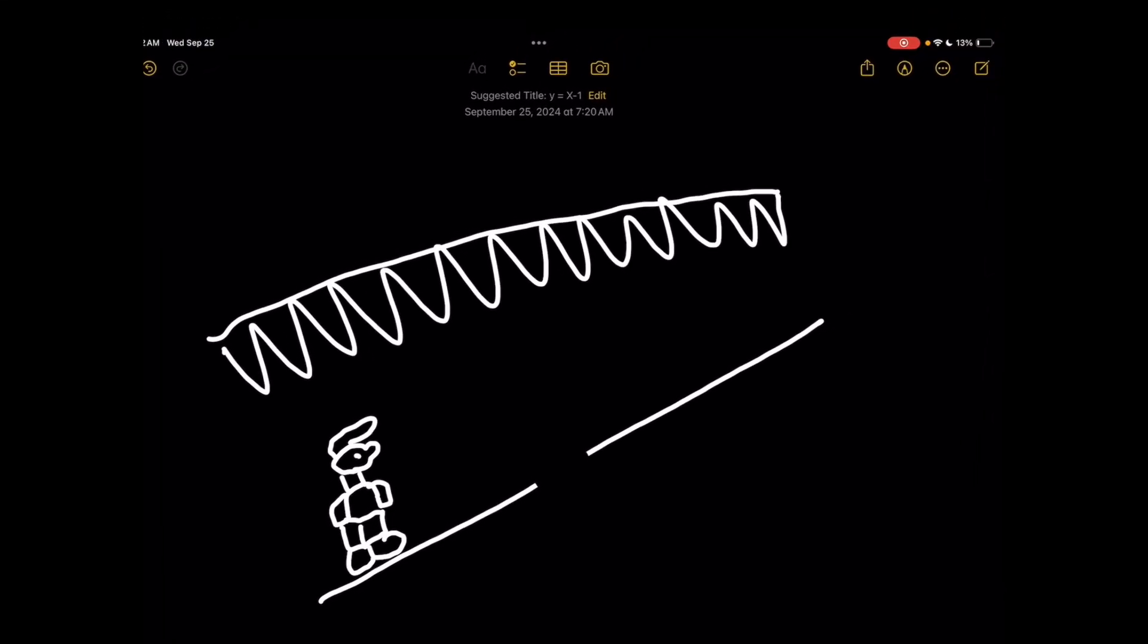Princess Peach helps Super Mario out with some math because she's tired of seeing him die. He keeps falling in that hole and whenever he jumps over it, those spikes above kill him.